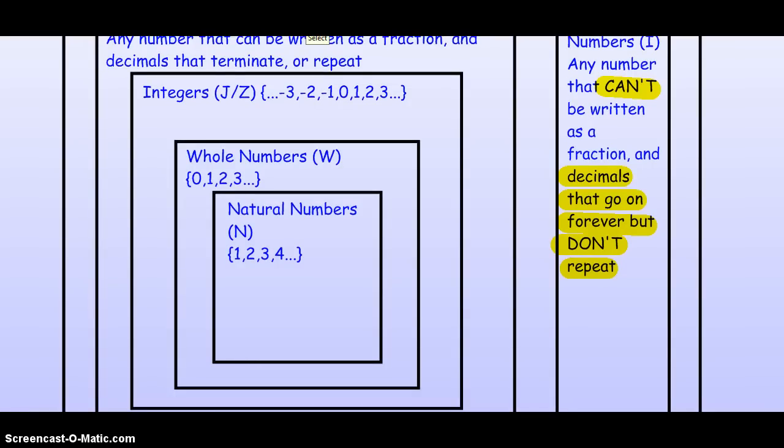So, if you had a decimal like 0.45813226, dot, dot, dot, because it goes on forever, you'll notice there's no repeating sequence. So, that makes this irrational.